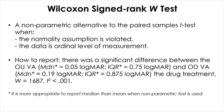The Wilcoxon signed rank test is the non-parametric alternative to the paired samples t-test. Again, you use this when the normality assumption is violated — specifically the normality of difference data — and when the data are at an ordinal level of measurement.